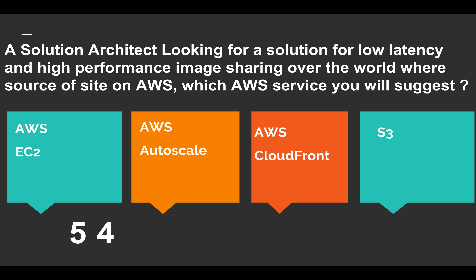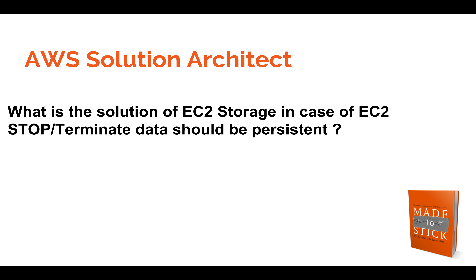The answer is AWS CloudFront. AWS CloudFront is used for CDN — Content Delivery Network — which distributes your information over different edge locations, making caching over there, and is really used for high performance and low latency. You can go for the detail of how CloudFront works in our session, but here the answer is CloudFront.